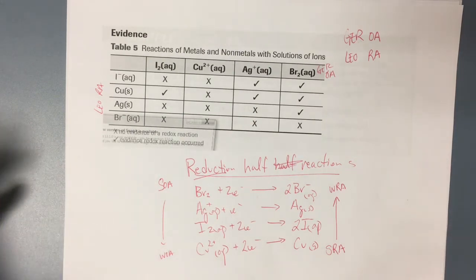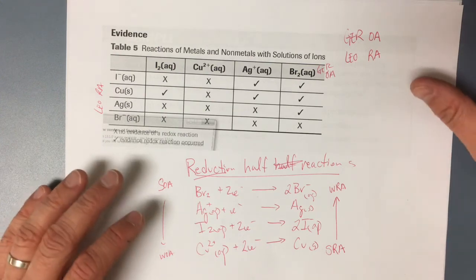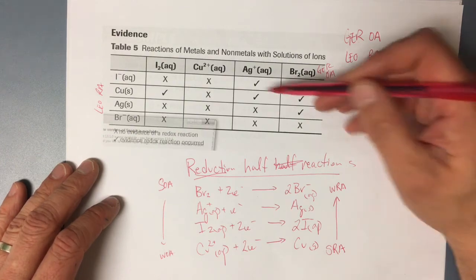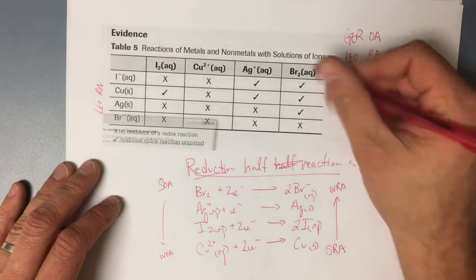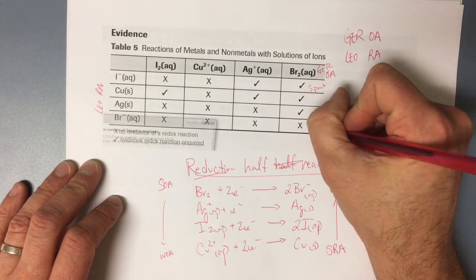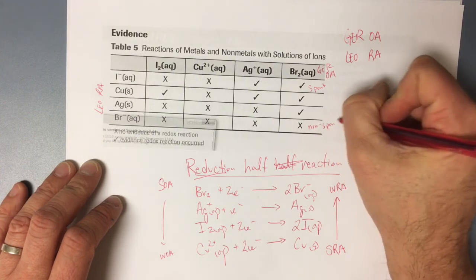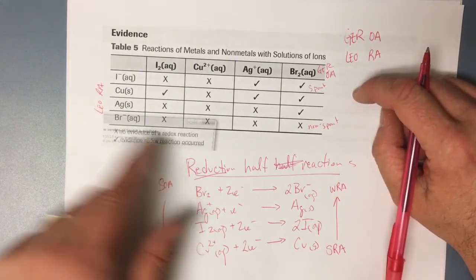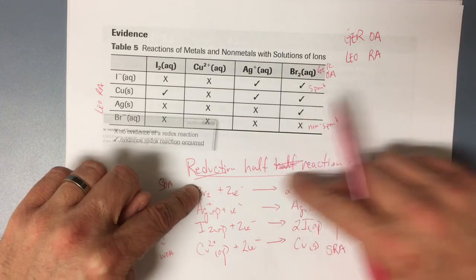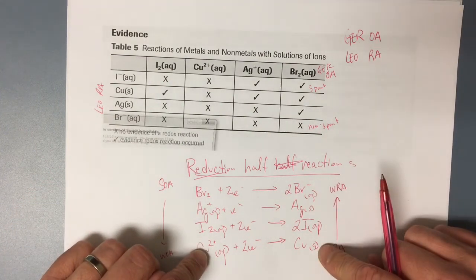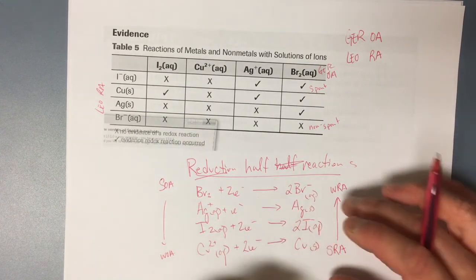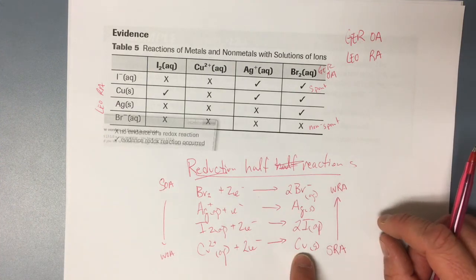We're going to use these half-reaction tables, and we'll see another way to construct a reduction half-reaction table in the next video. They can show this information in a few different ways — they might label reactions as 'spontaneous' or 'non-spontaneous.' The basic idea is: list your strongest oxidizing agent and fill in its half reaction, down to your weakest oxidizing agent at the bottom. If you read the table going backwards, those are your reducing agents.